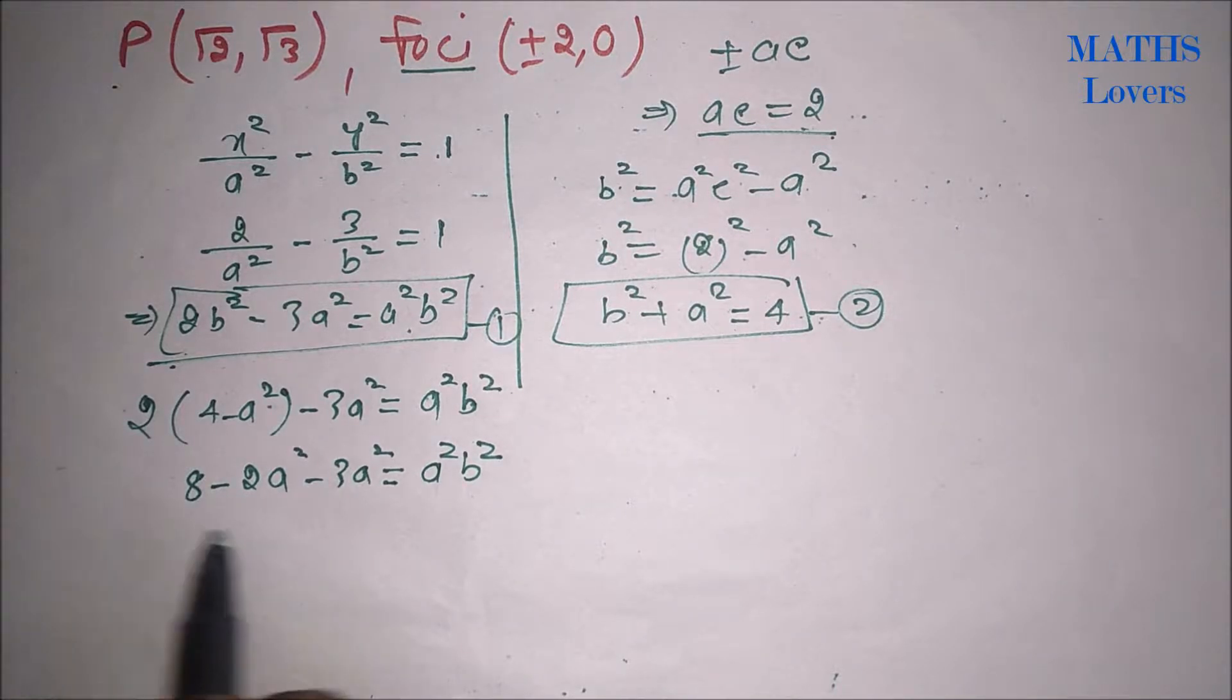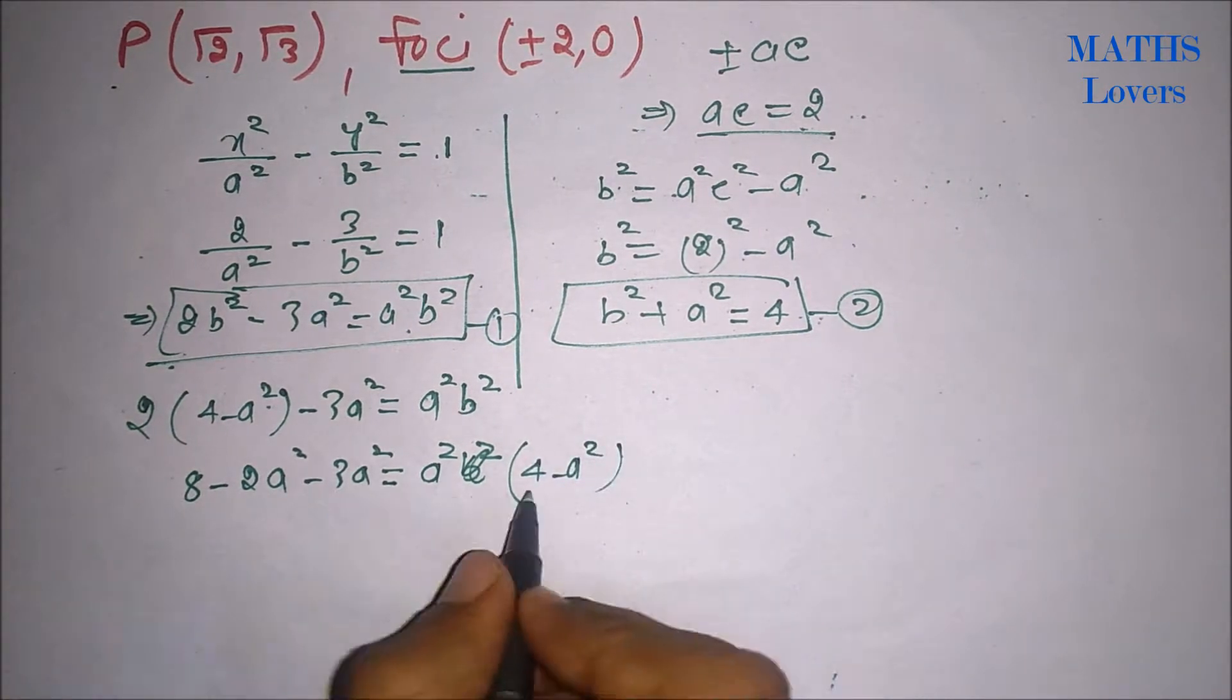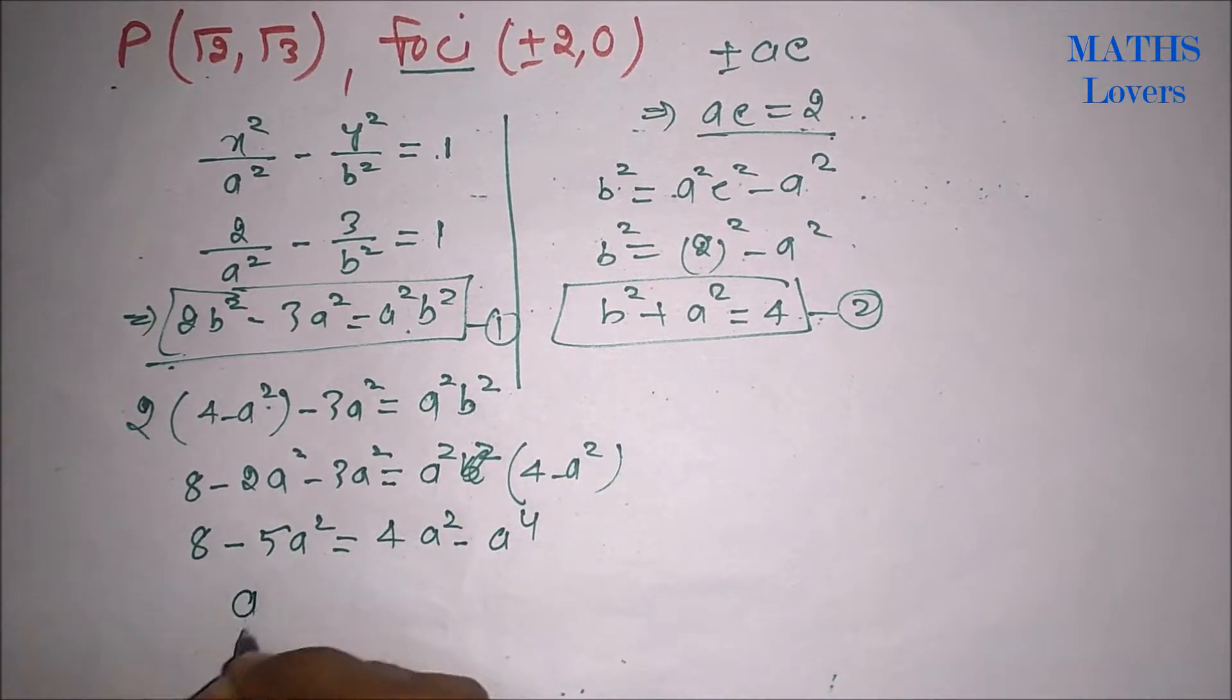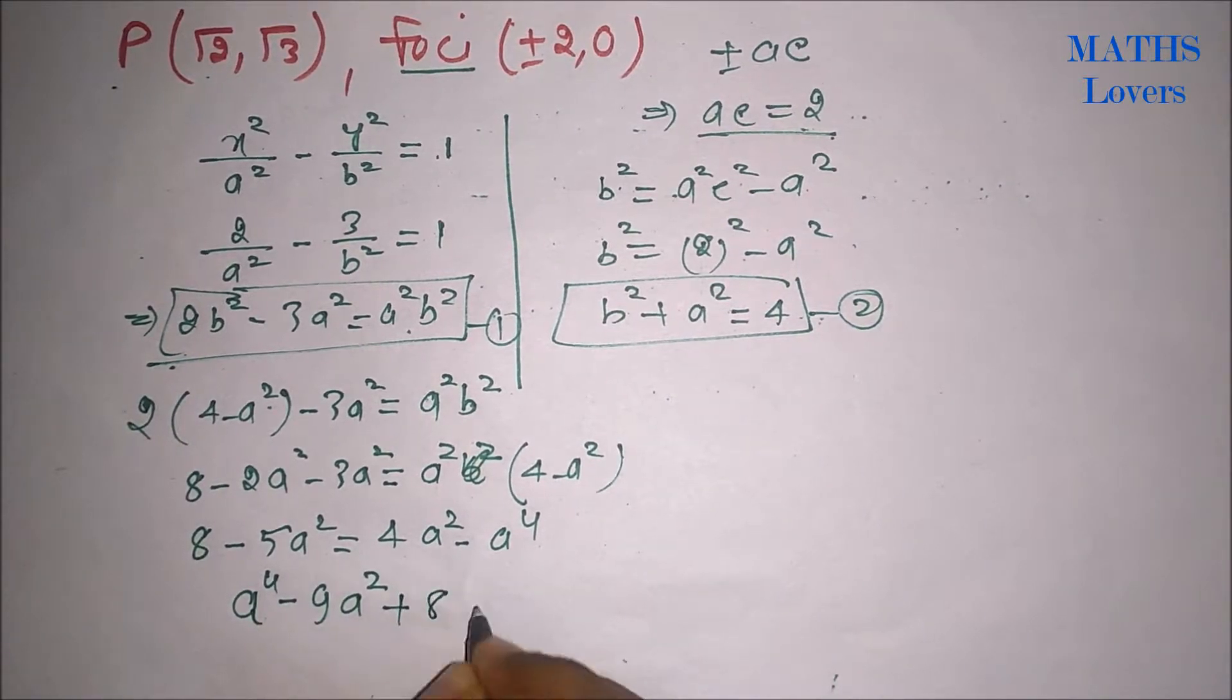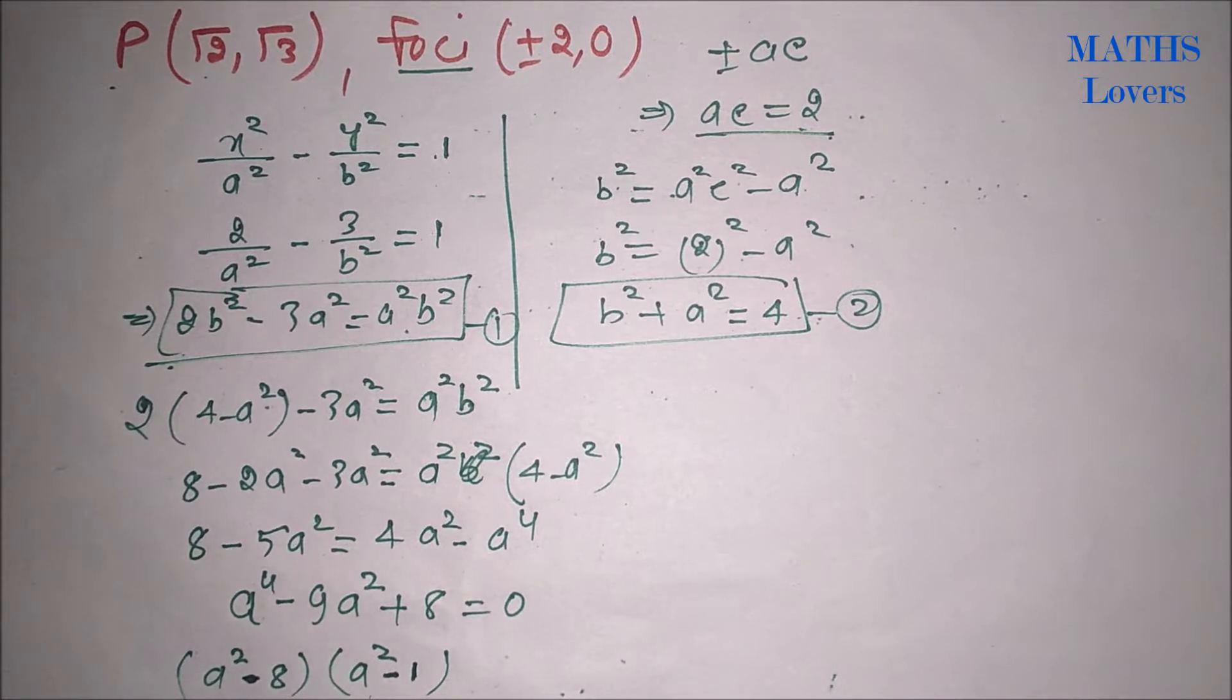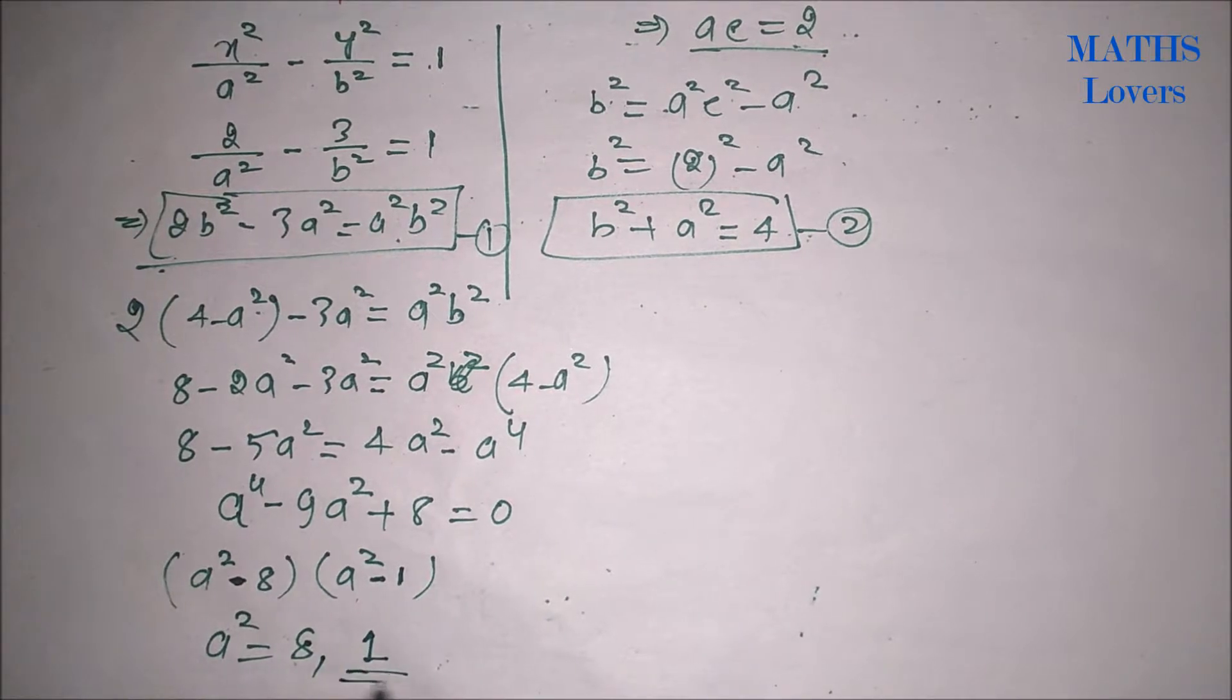What we can do? Sorry, this is also b². So 4 - a², it will come out 8 - 5a². Now, this is 4a² - a⁴. We can write a⁴ - 9a² + 8 = 0. If you factorize it, you will get (a² - 8)(a² - 1). So you are getting either a² = 8 or a² = 1.